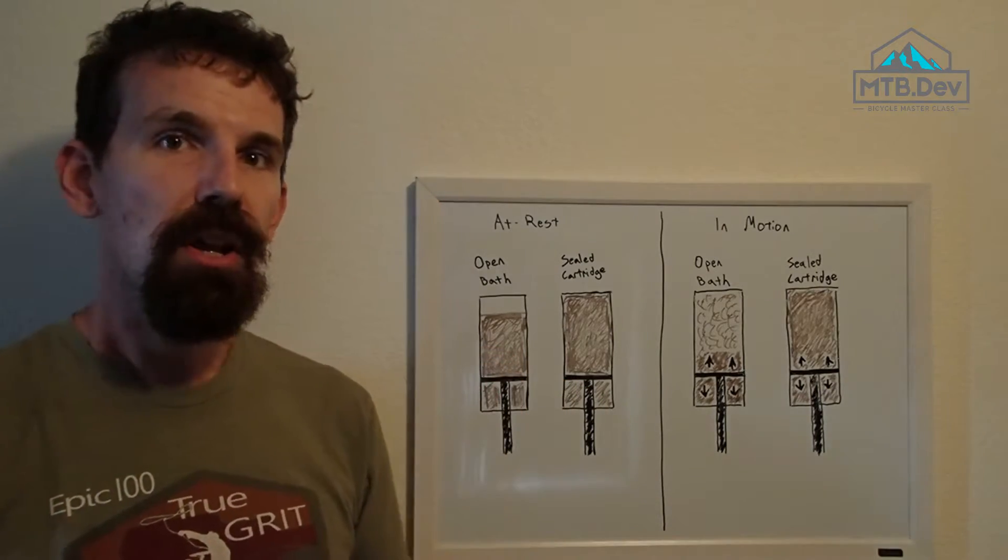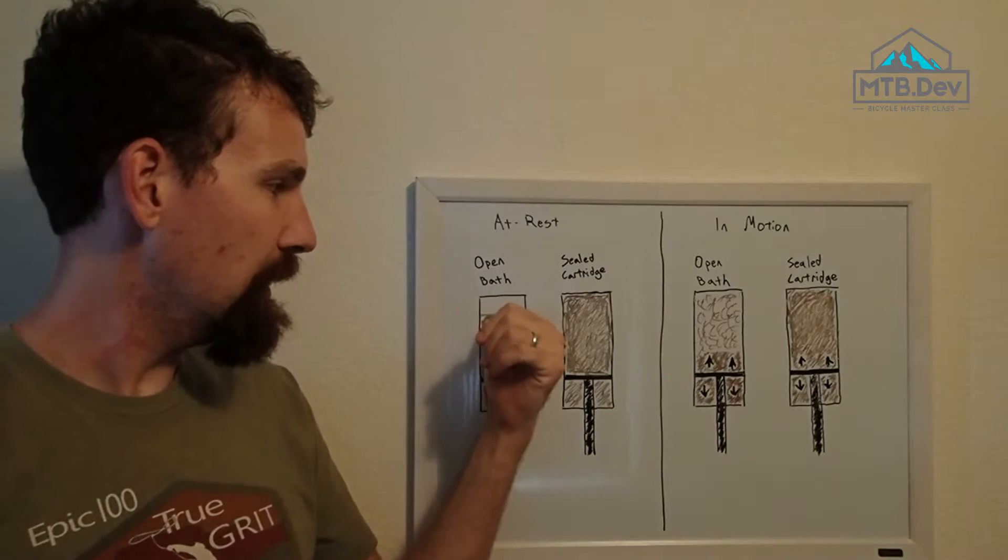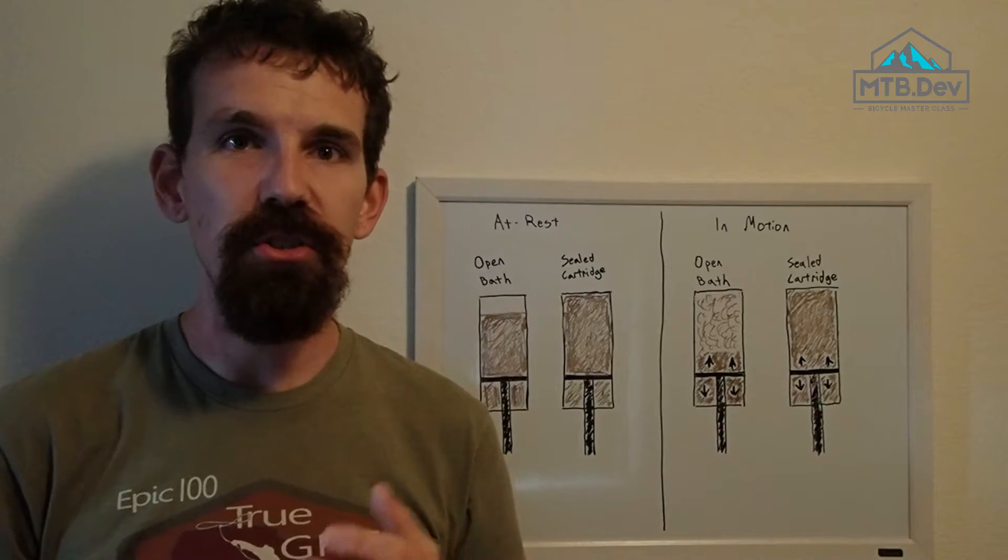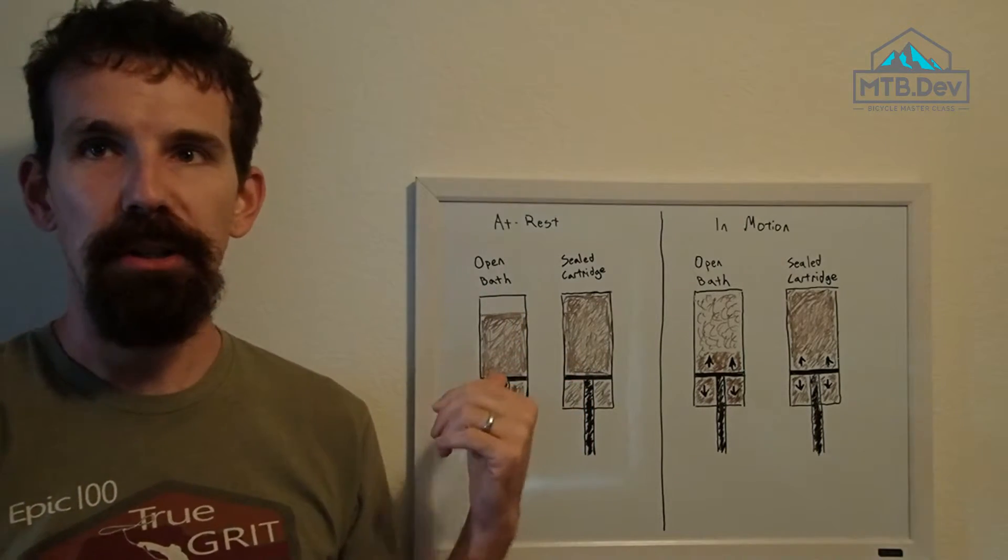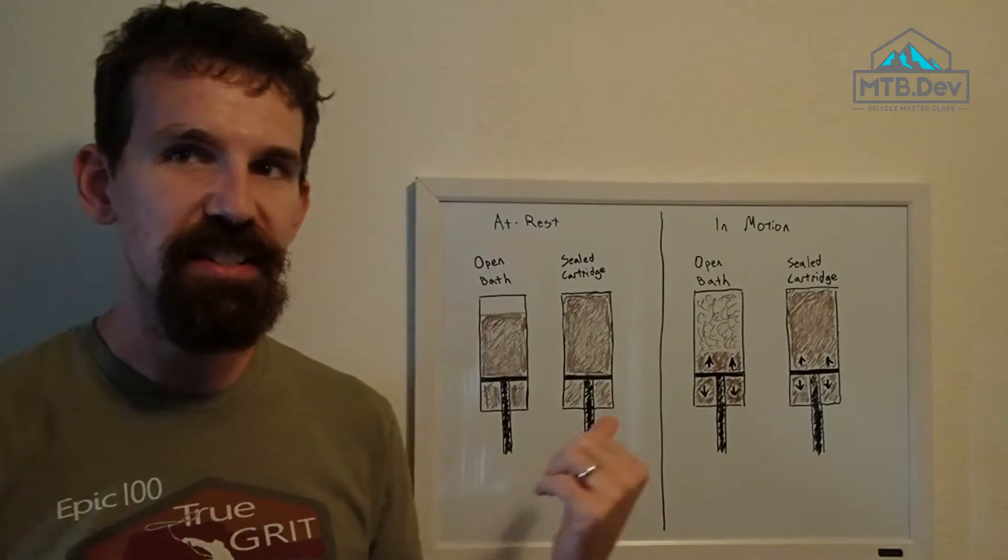Open bath dampers have a portion of air in the top of the body where the oil is, and work by forcing a piston or friction inducing device through the fluid. These are simpler, cheaper, and easier to maintain than sealed dampers.